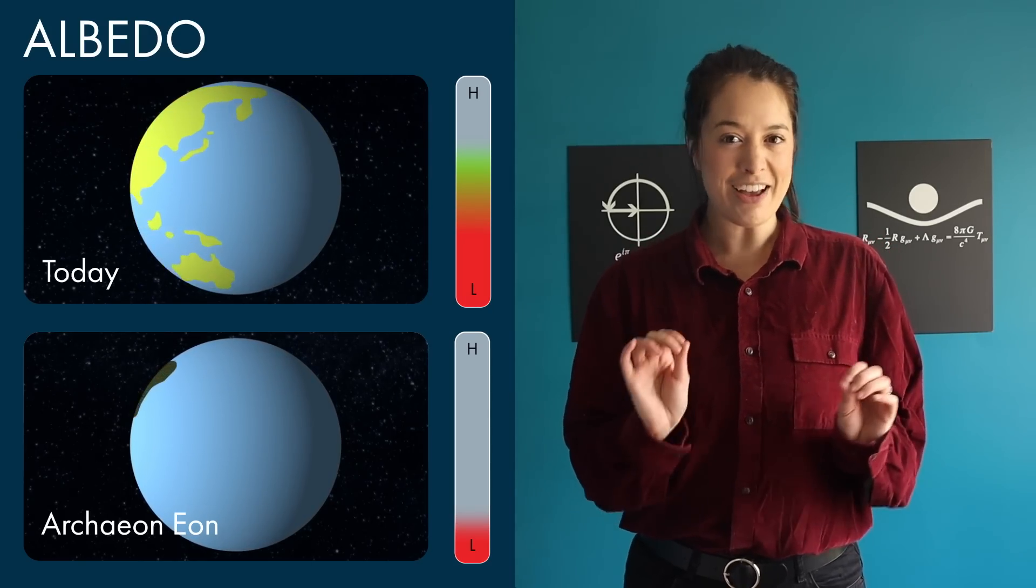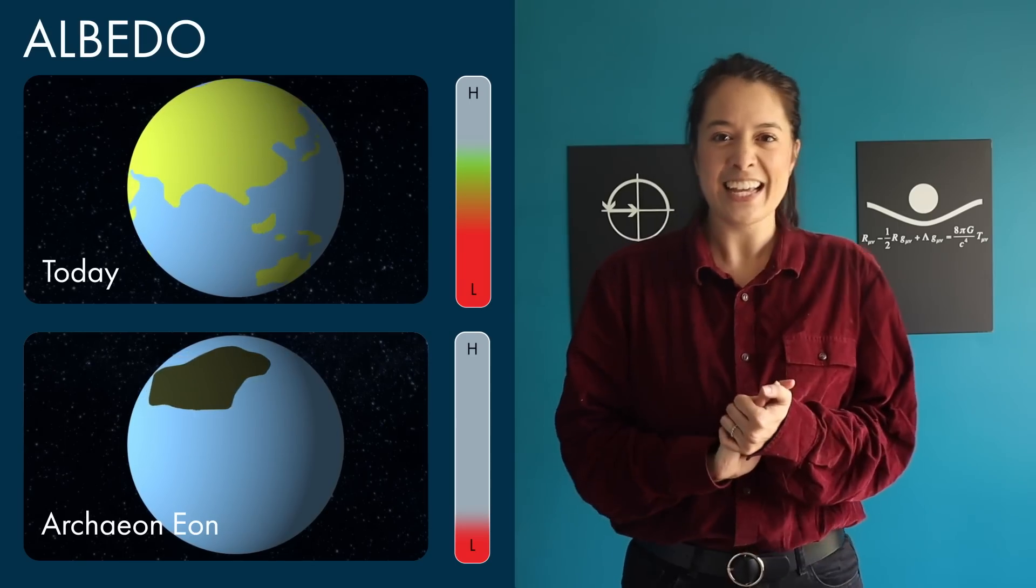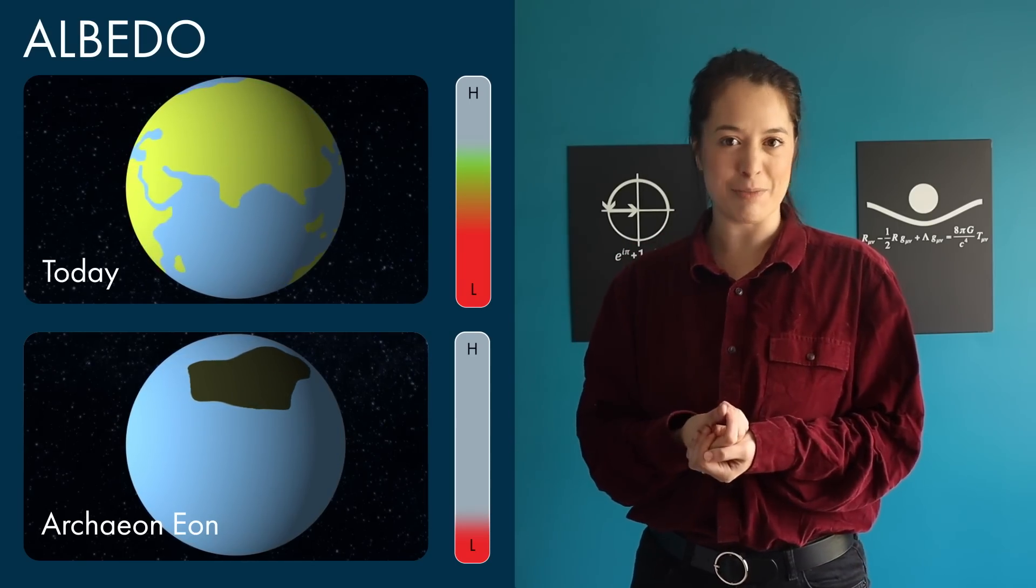In short, young Earth had a lower albedo than older Earth, so it could absorb more of the sun's limited rays.